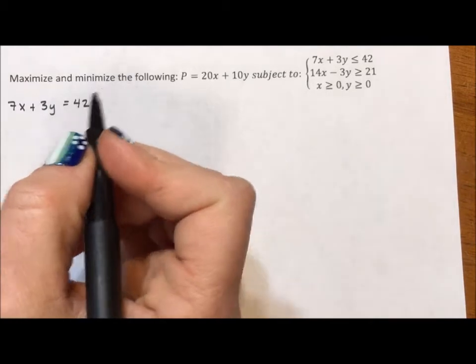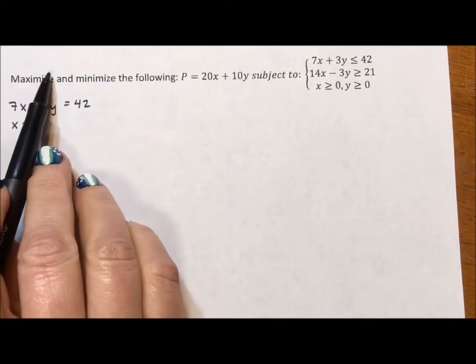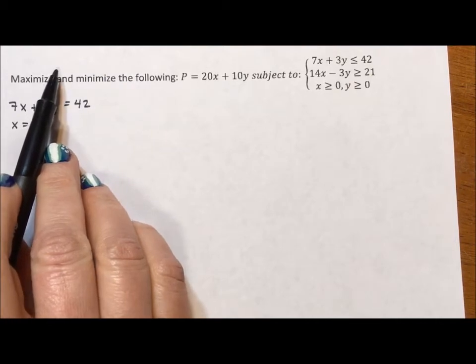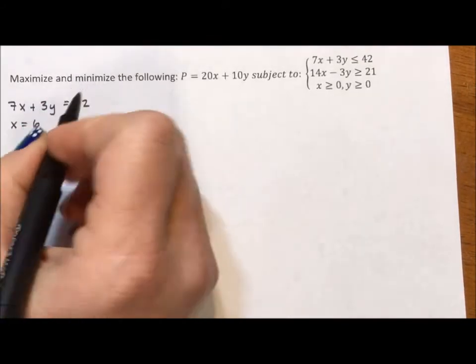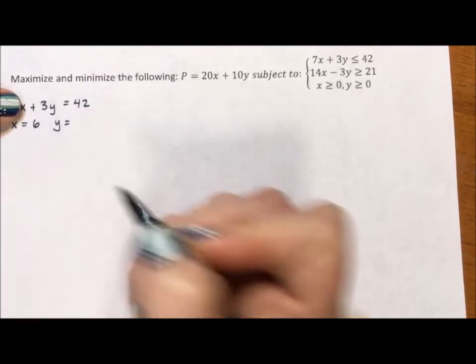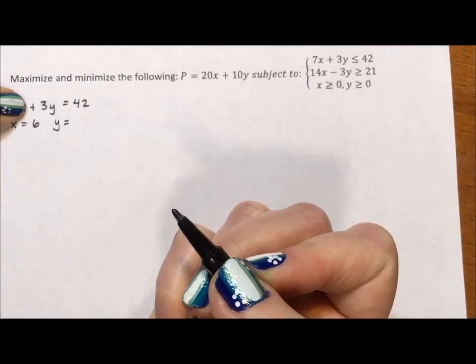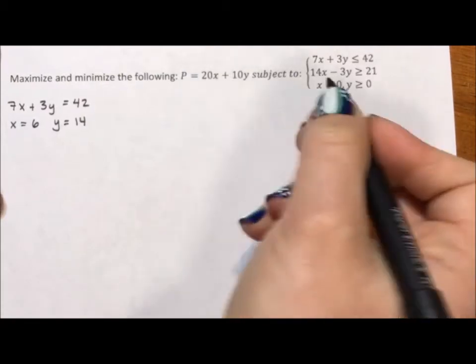If I want to graph this by the intercepts, I first look for the x-intercept. The x-intercept happens when y is equal to 0. If y is equal to 0, 7x equals 42, x is equal to 6. For my y-intercept, I set x equal to 0, so 3y is equal to 42, which means y is equal to 14. Okay, so these are my two intercepts for my first line.